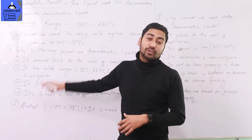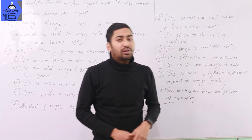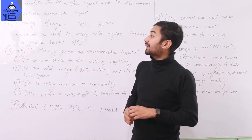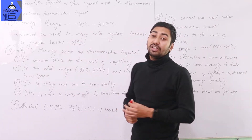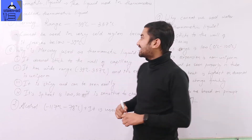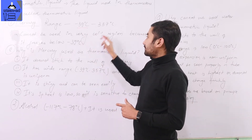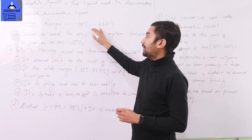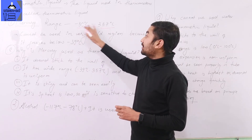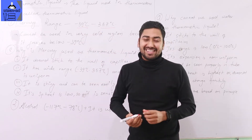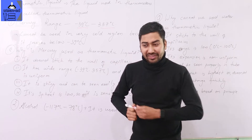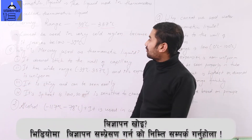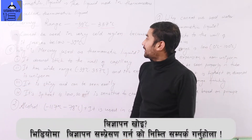This is mercury, and this is alcohol — alcohol is generally used as a renewable thermometric liquid. Mercury's liquid range is minus 39 to 357 degrees Celsius, which is a very large range — near to 400 degrees Celsius.